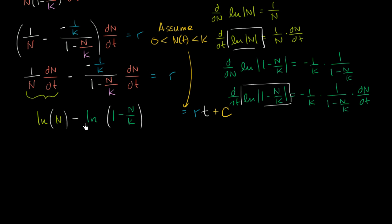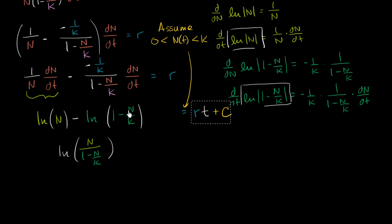We can use logarithm properties to rewrite the left-hand side: the logarithm of something minus the logarithm of something else is the logarithm of the first divided by the second — so that becomes the log of n over (1 minus n/k), and this is equal to r times t plus c.